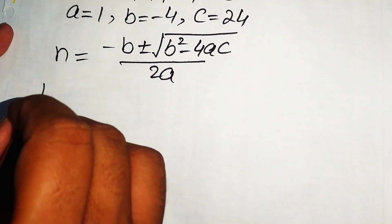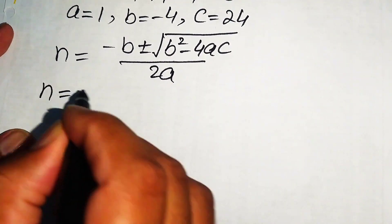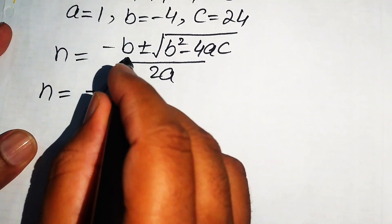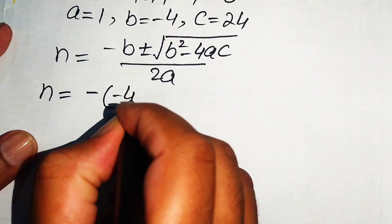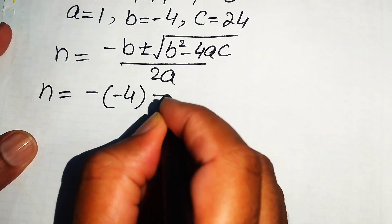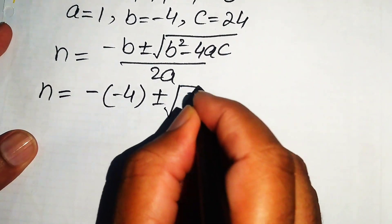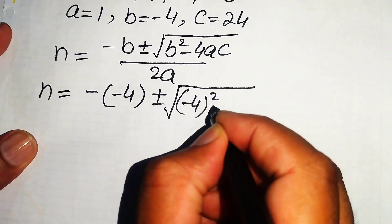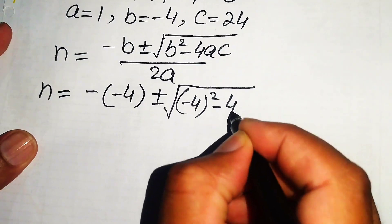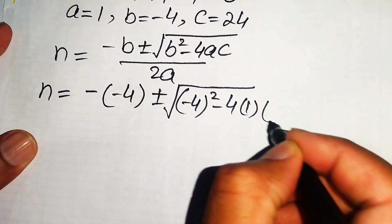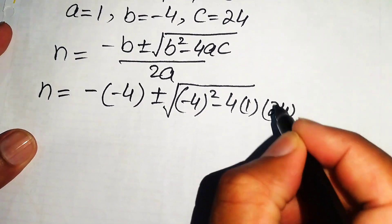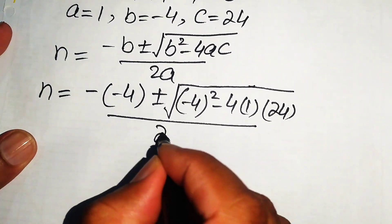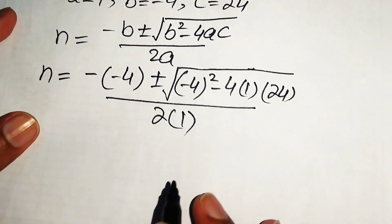Substituting the values of a, b, and c, we get: minus times of minus 4, plus or minus the square root of (minus 4) squared minus 4 times 1 times 24, all divided by 2 times 1.